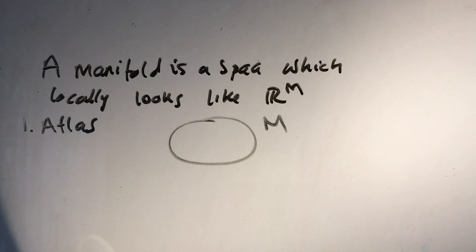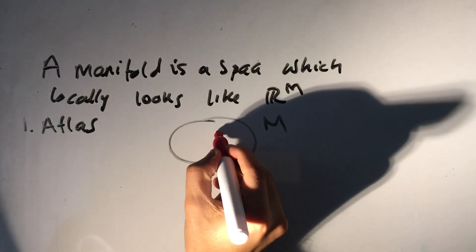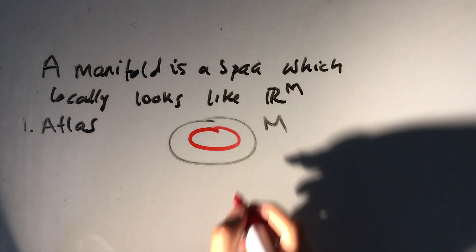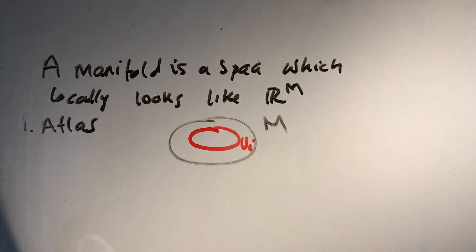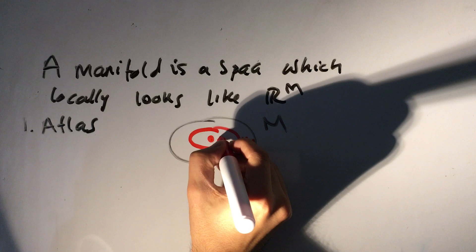Now this manifold is covered by patches. So let's draw one, there's one patch, this is a different color. So here's a patch. Let's call it U_i, and there's a point P here.